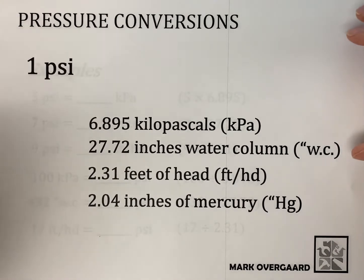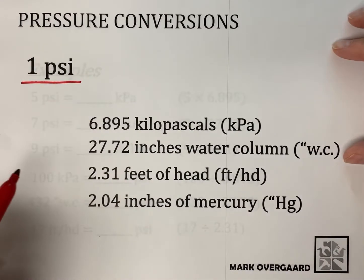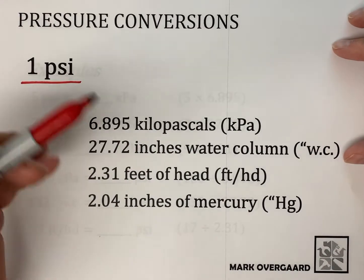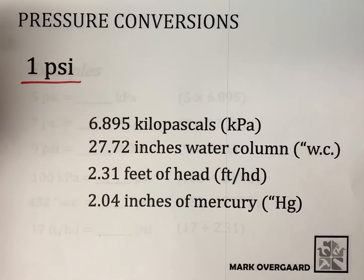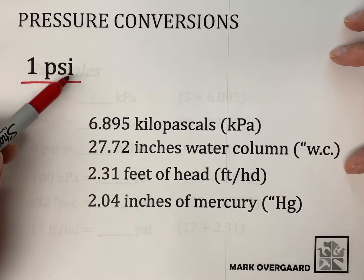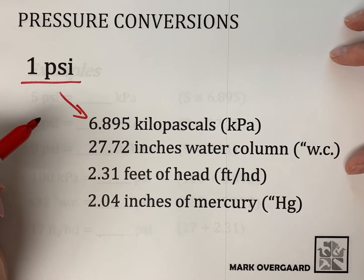So the starting point here with pressure conversions is one PSI or one pound per square inch. All we're doing is saying the pressure in different ways, like 12 inches is one foot. Same kind of idea, same length, just a different way to say it. So one PSI, if we were to convert it to kilopascals, one PSI would equal 6.895 kilopascals.